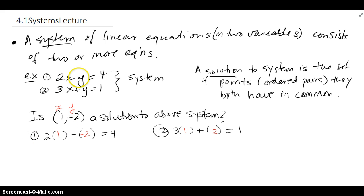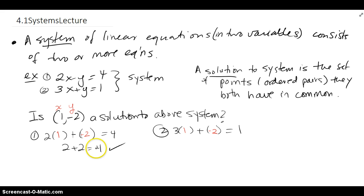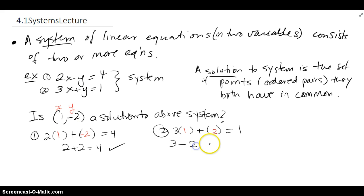So we plug the ordered pair (1, -2) into equation 1 and into equation 2. For the first equation we get 2 plus 2, which is 4 — so it works for this one, giving me motivation to check the second one as well. When I put (1, -2) into the second equation, I also get 1 is equal to 1.